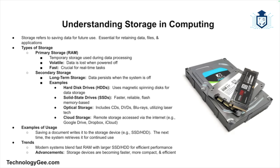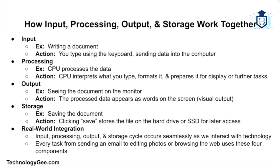Storage devices are used to save data files and applications we might need later. When you save a document on your computer, it's written to a storage device such as an SSD or HDD. The next time you open it, the system retrieves it from storage. Modern computers rely on a combination of fast temporary memory like RAM and larger long-term storage like an HDD or SSD. As technology advances, storage devices have become faster, more compact, and more efficient.